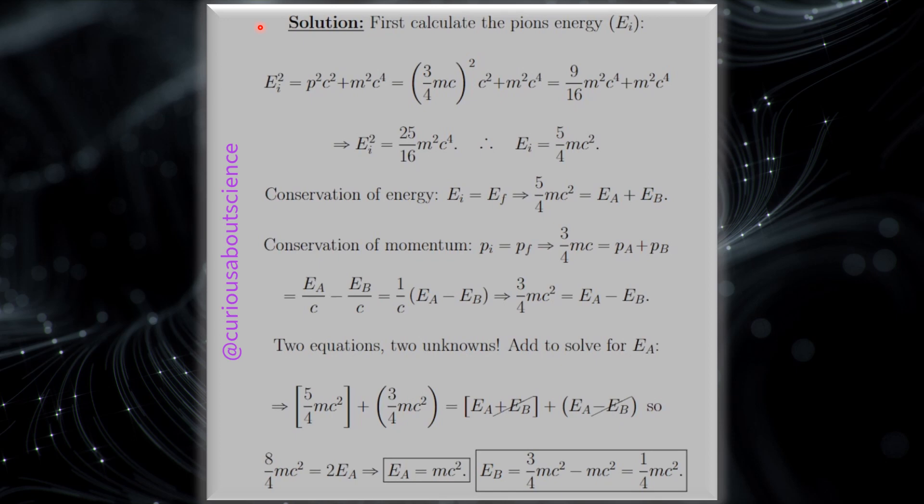So the first thing that we need to do is calculate the pion's energy, EI. Again, if we're going to have conservation, we need to have the initial and the before and the after, so the initial and final.